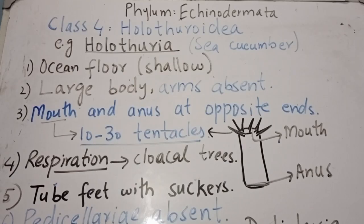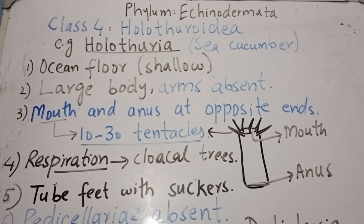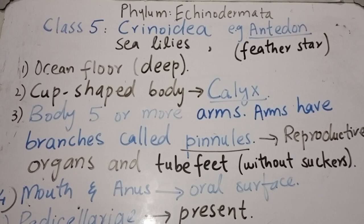The four classes Asteroidea, Ophiuroidea, Echinoidea, and Holothuroidea all belong to sub-phylum Eleutherozoa and are free-moving echinoderms found crawling on the ocean floor in shallow or deep water. The fifth and final class is Crinoidea, which belongs to sub-phylum Pelmatozoa. These are stalked echinoderms that do not move and are attached to a substratum.